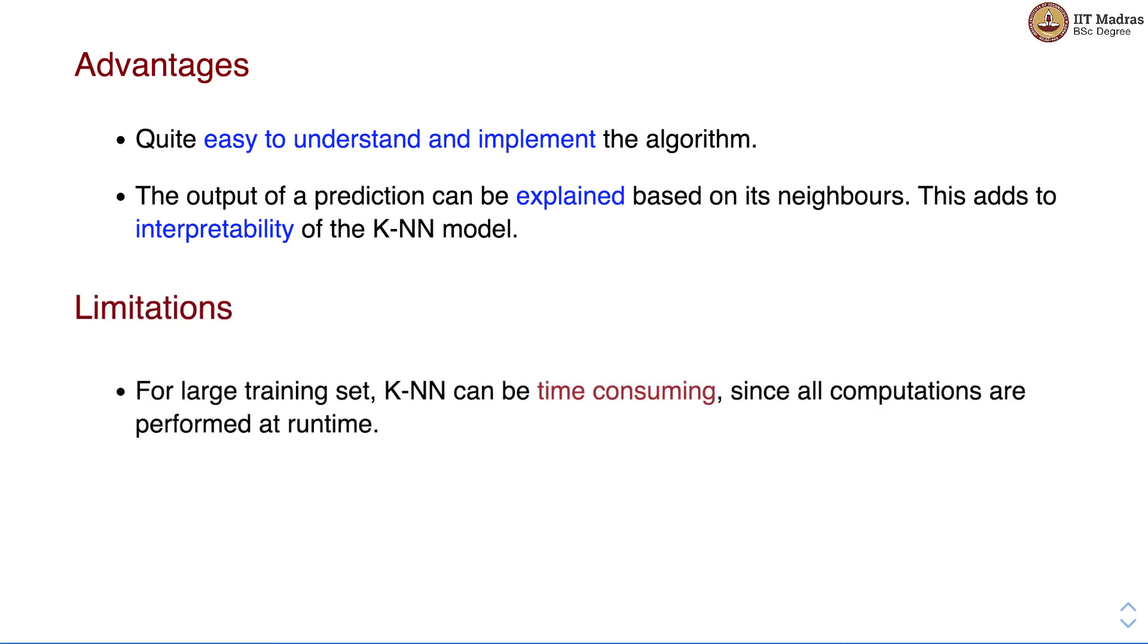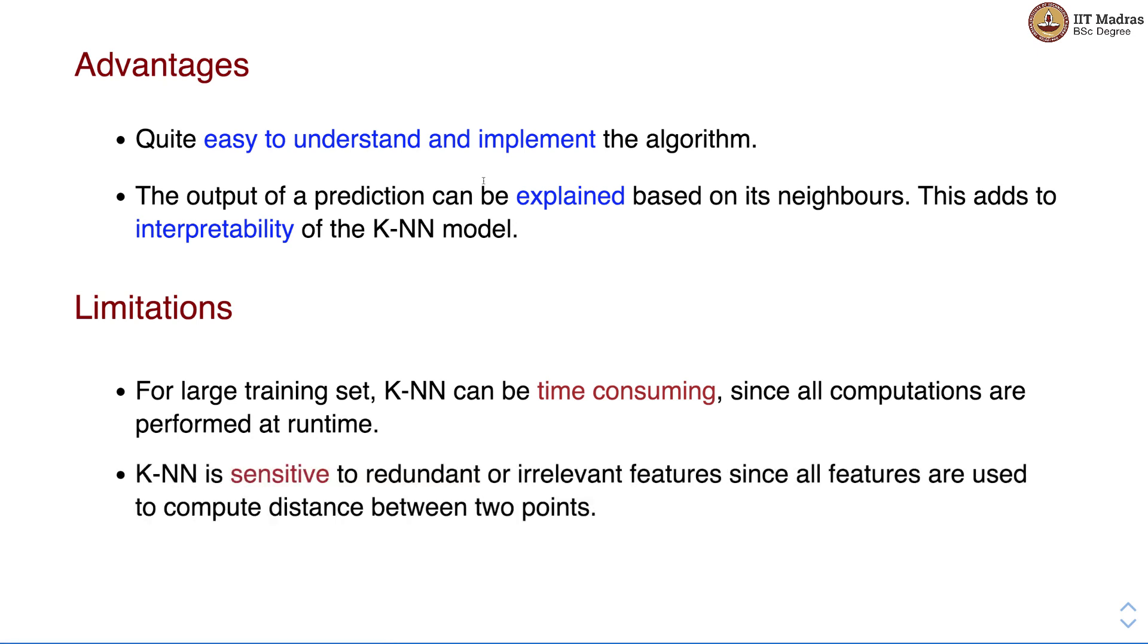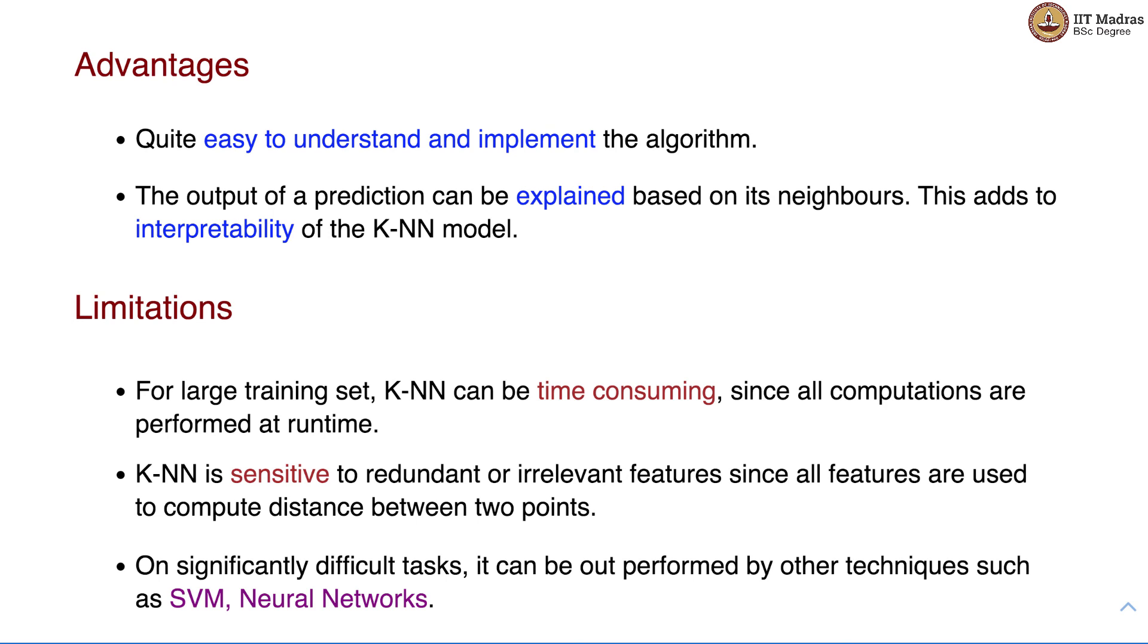KNN has certain limitations. For large training set, KNN can be time consuming since all computations are performed at runtime. KNN is sensitive to redundant or irrelevant features since all features are used to compute distance between two points. On significantly difficult tasks, it can be outperformed by other techniques such as SVM and neural networks.